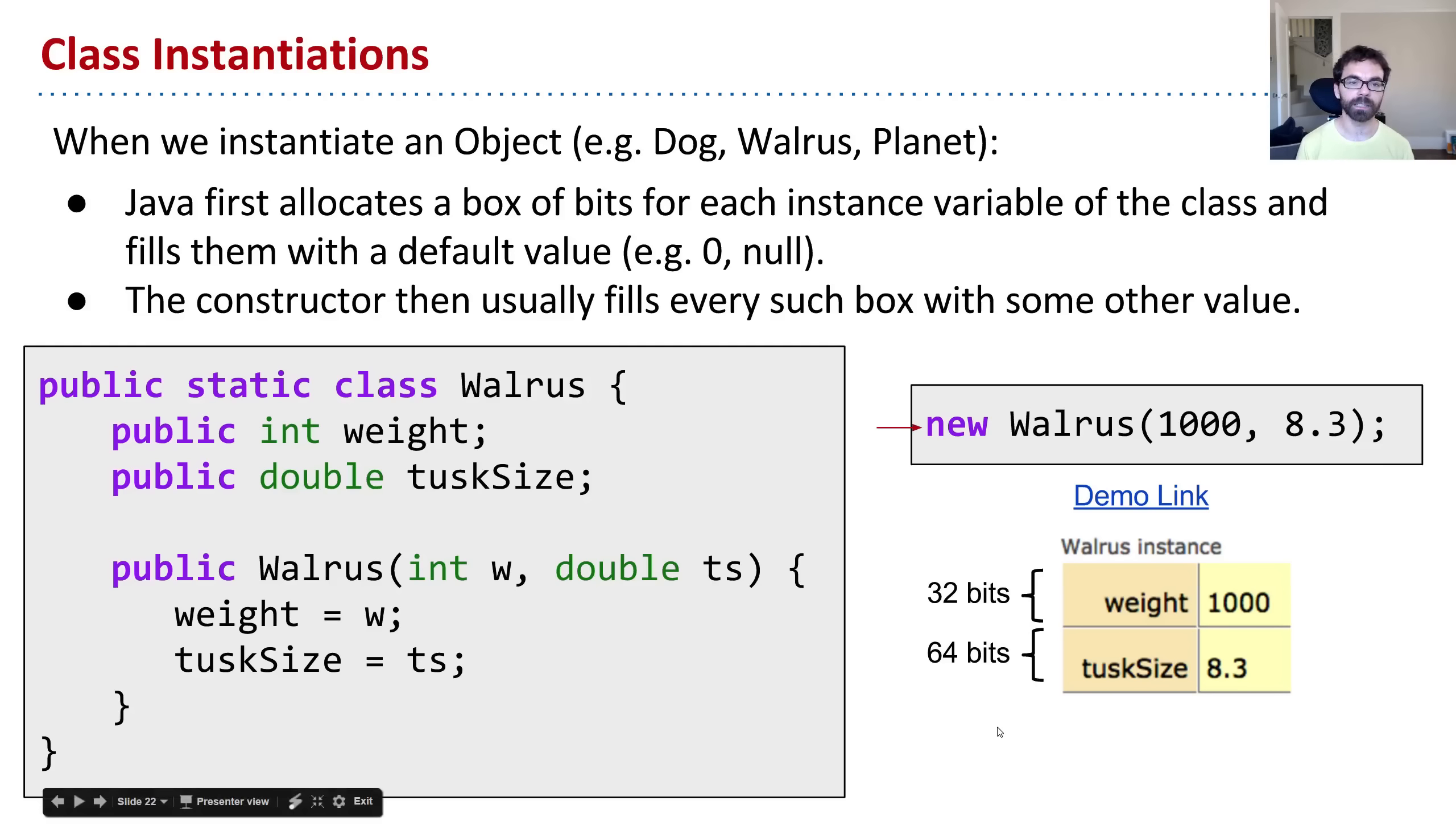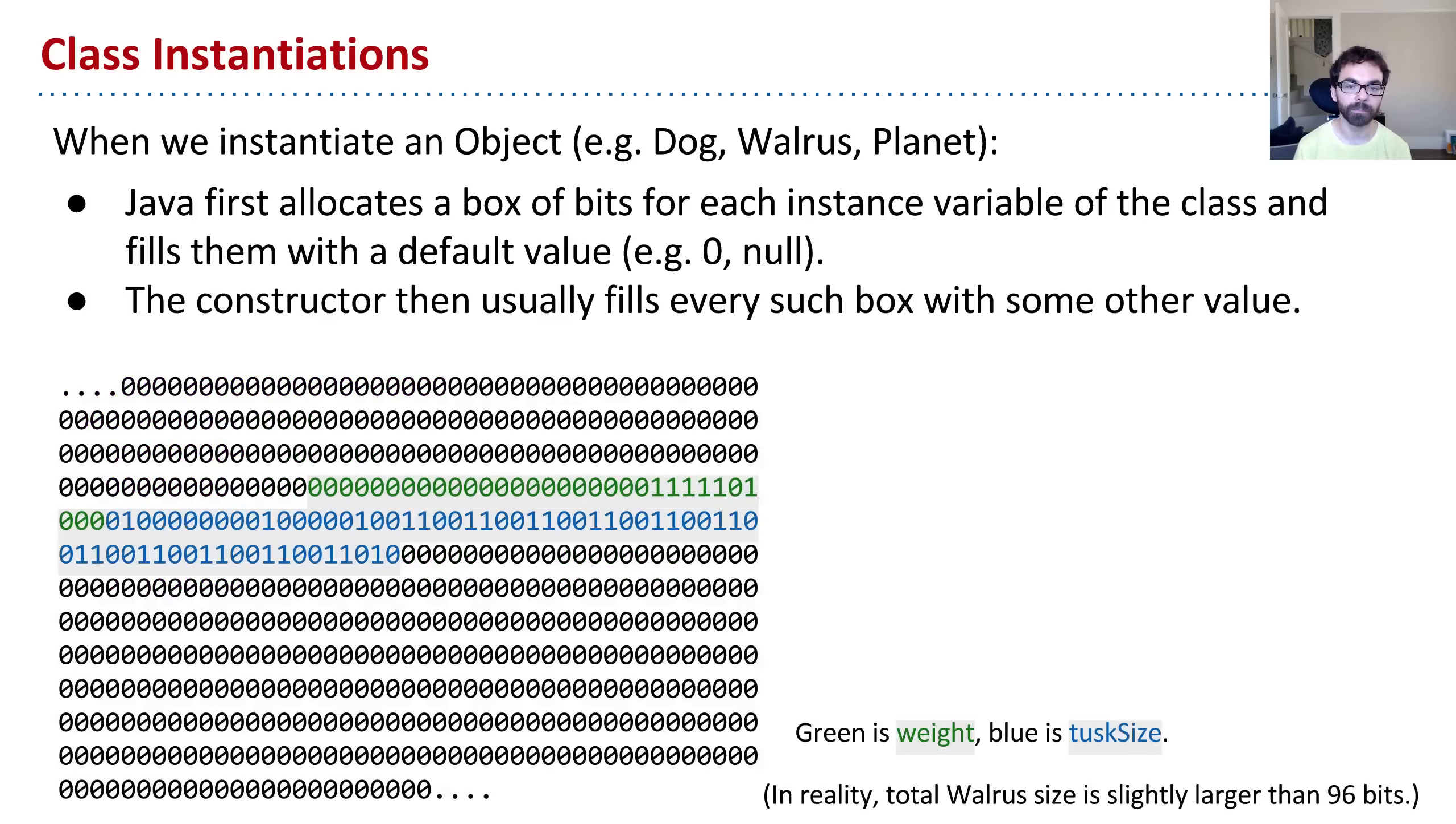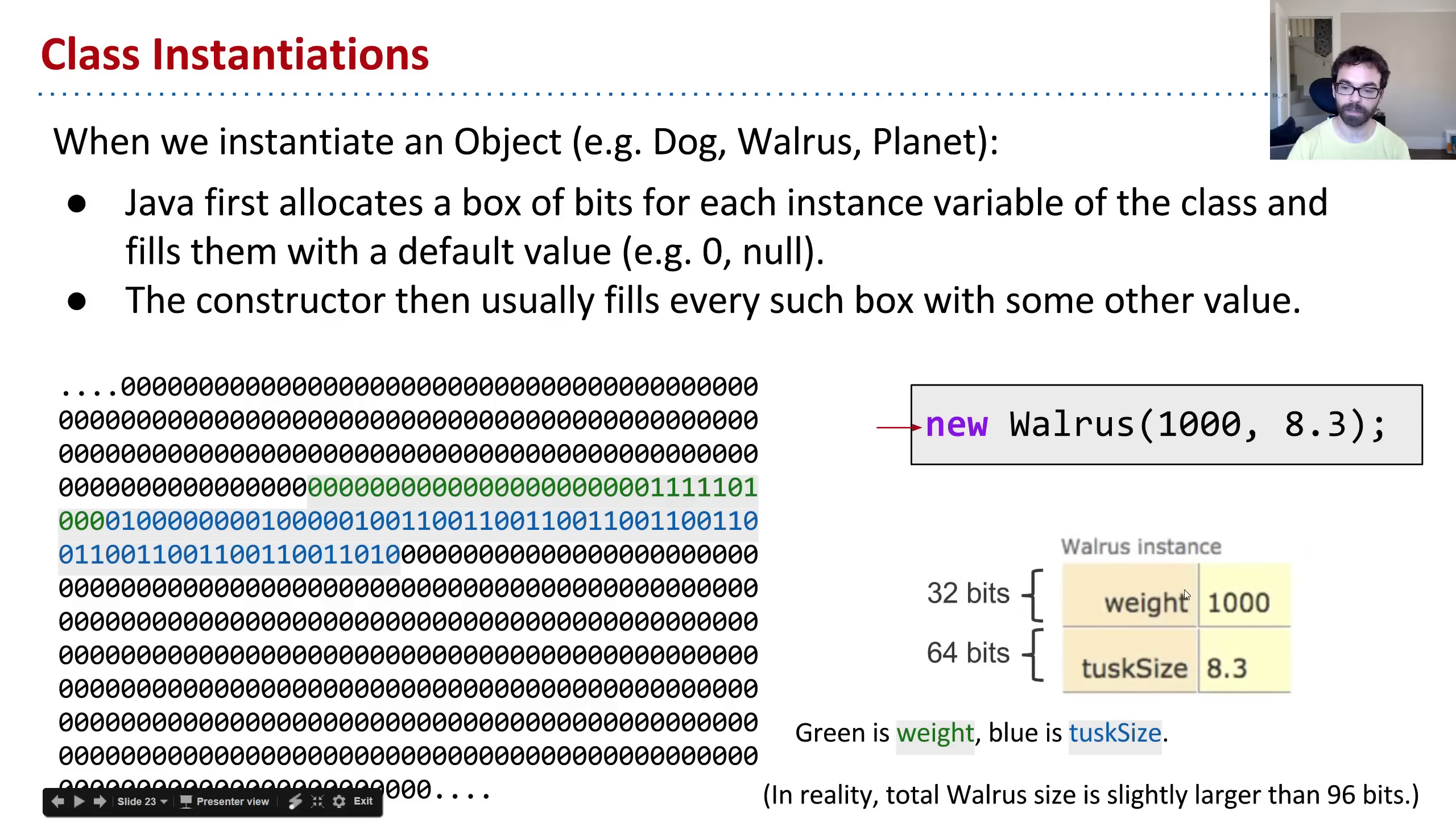Now it's interesting to actually reflect on what happens at the bit level. Now this is a little beyond the scope of the class, but somehow I find it satisfying to know that this is approximately what's going on under the hood. So it's a little bit of a simplification. But in this case, whenever we call new, what Java will do is when I say new walrus, it's going to dig through memory, and it's going to find 96 bits, because that's how many it needs to store the walrus. And then the constructor will fill in this top bit with 1,000, and this bottom bit here, the blue bits, with 8.3. So this happens to be 8.3.